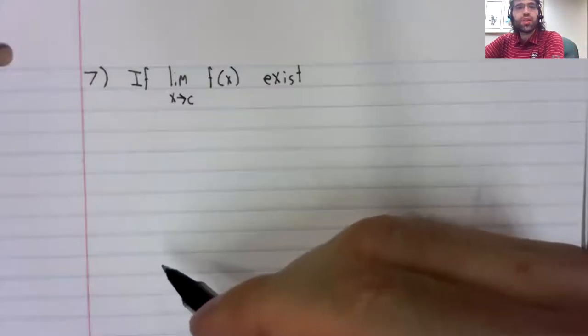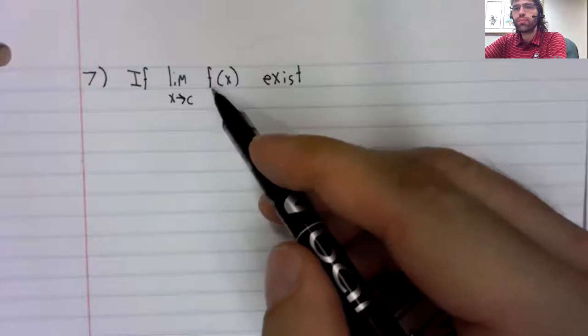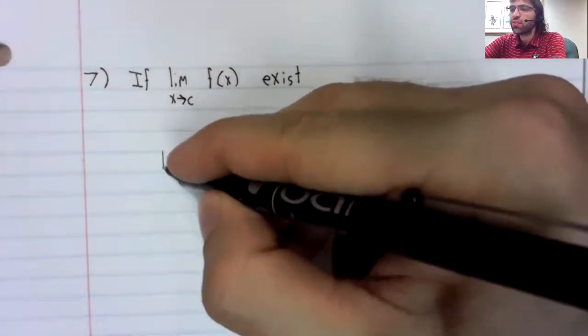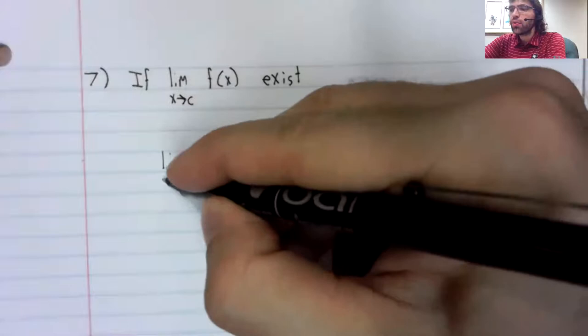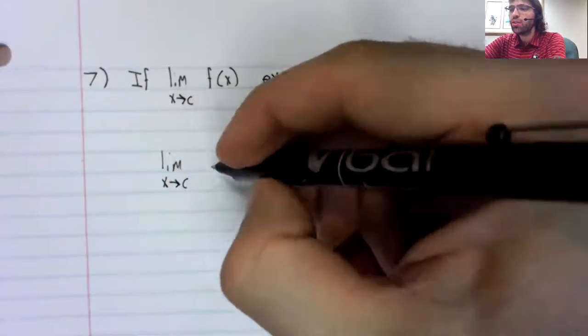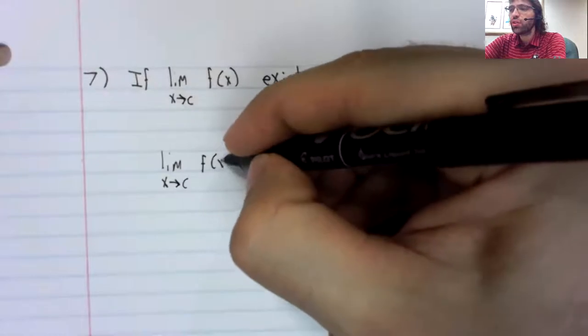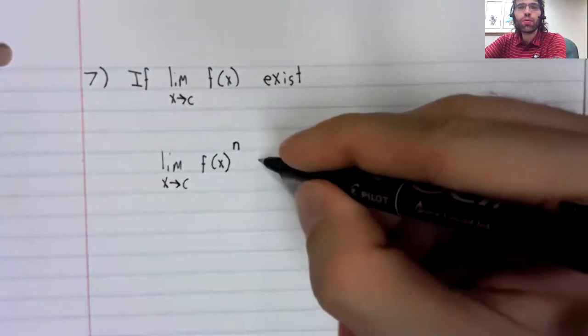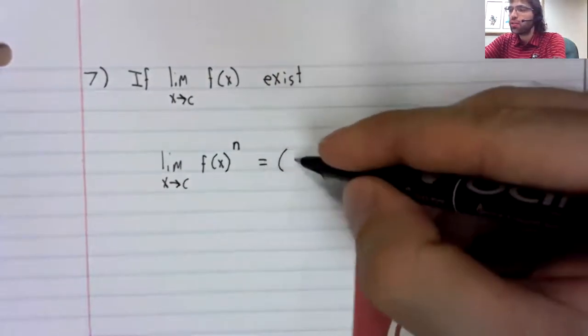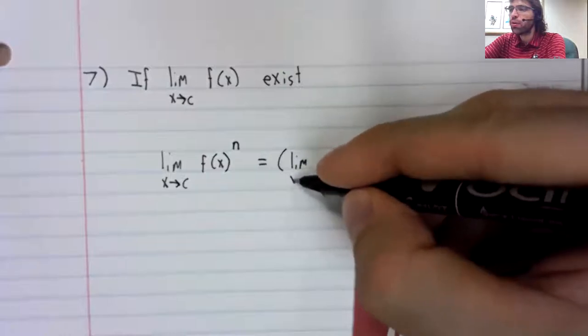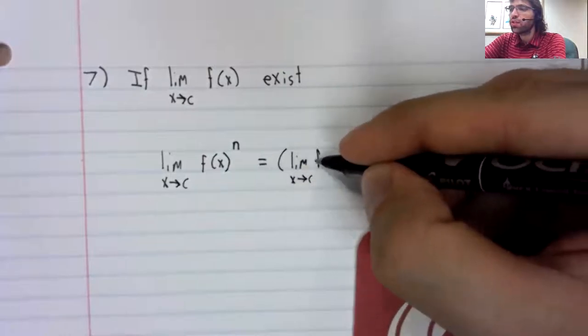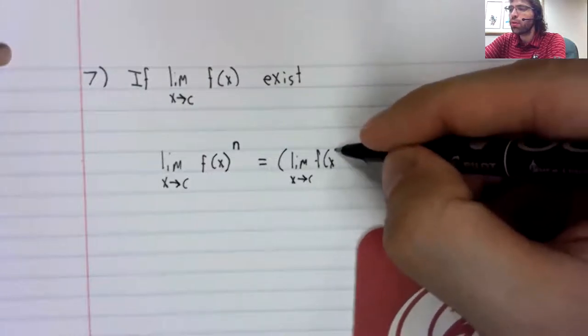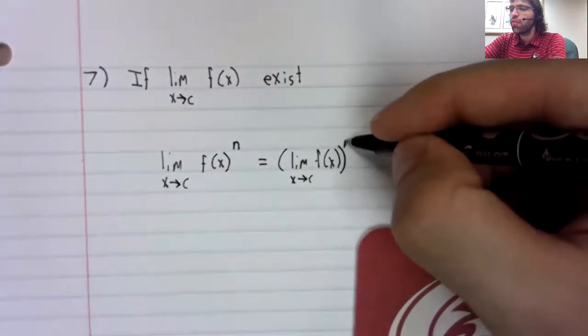Let's state two more limit laws. This is a law for powers. If this limit exists, and we want to find the limit of this function raised to a power, the limit of a power is the power of the limit.